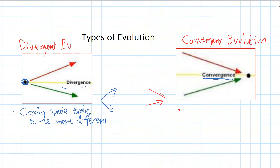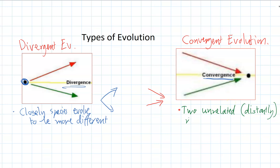Convergent evolution is the exact opposite — evolving towards something. Two distantly related species evolve to look more similar. Think about an echidna in Australia and a hedgehog in America: echidnas are marsupials and hedgehogs are placental mammals, but they look so similar because they've evolved in similar environments.